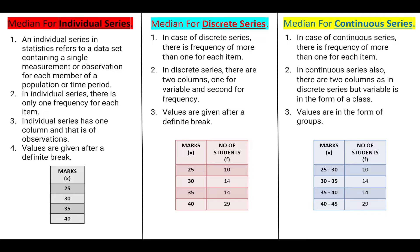Basically, individual series will consist of only one column consisting of the observation. Discrete series will consist of two columns — one giving the variables and the second giving the frequency. Continuous series will also consist of two columns — one giving values in the form of groups or class, and the second giving the frequency.